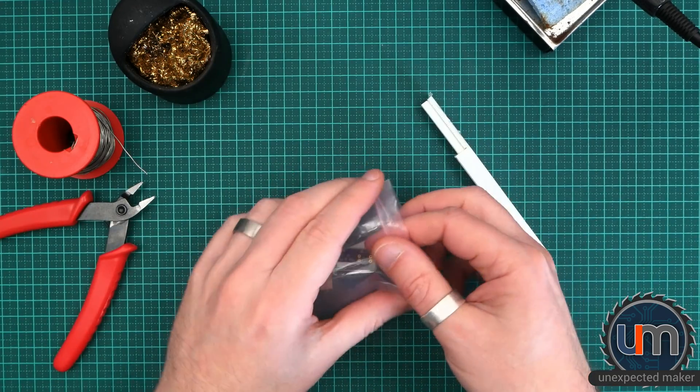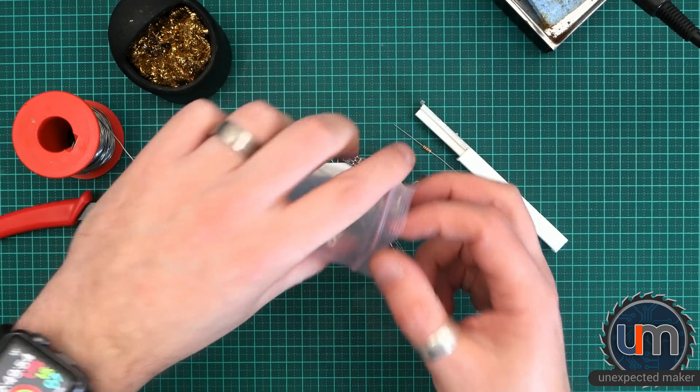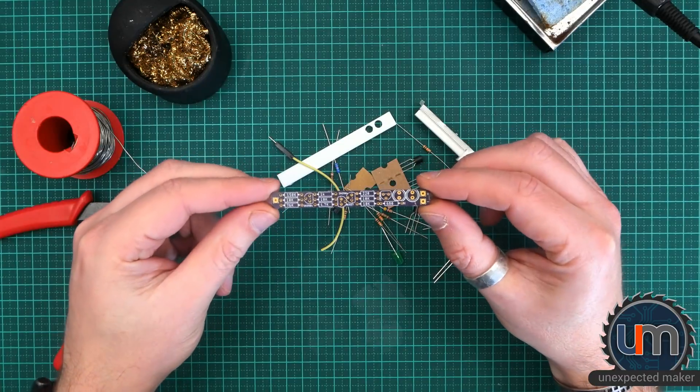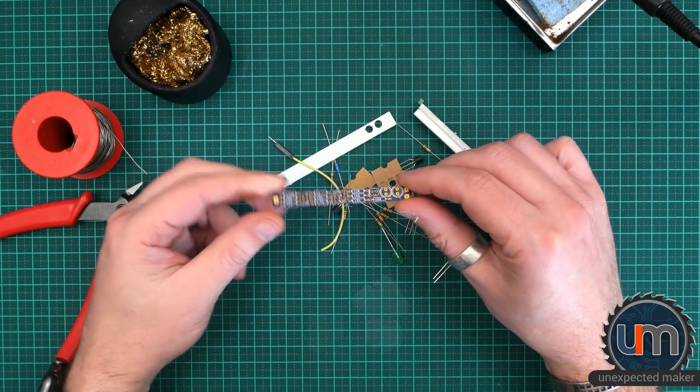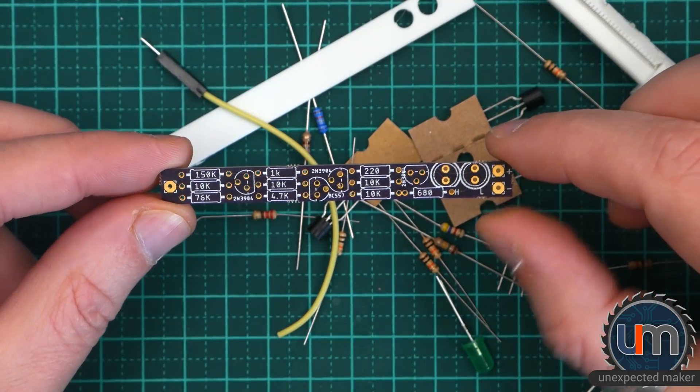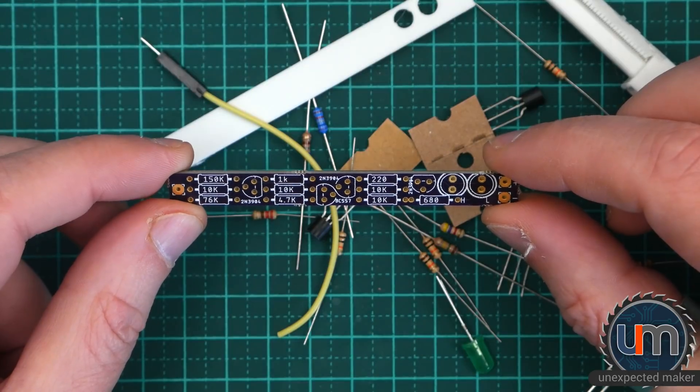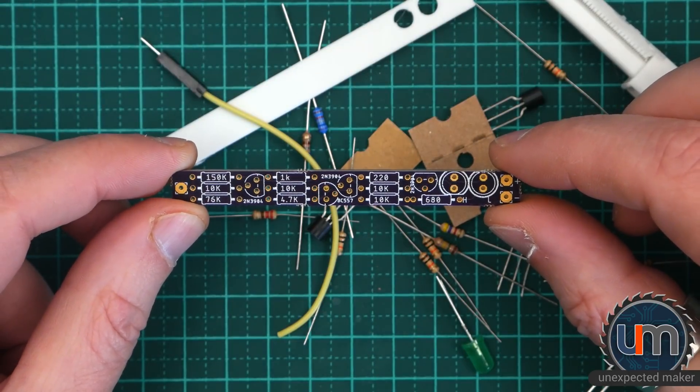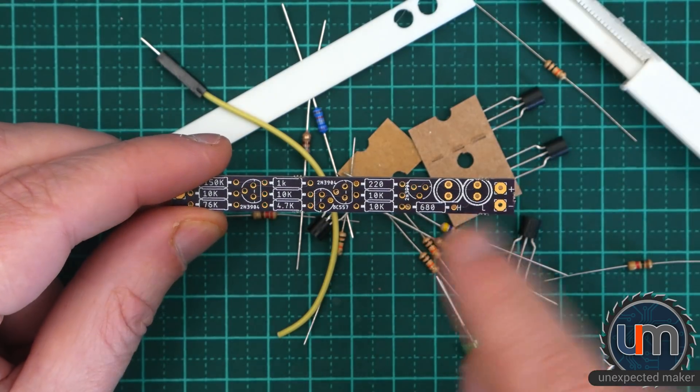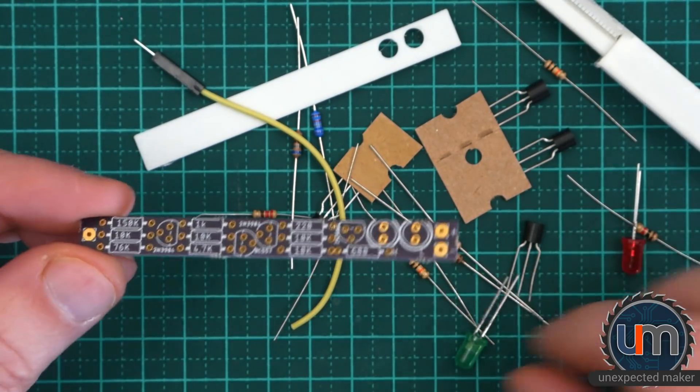I bought this kit off Dave Astels from his Tindie store. It's a logic probe, it's all through hole. You might have seen it on one of my unexpected mail videos. Let's get a little bit closer and have a look at the board. As you can see, it's all through hole. Everything is nicely labelled. All the resistors are labelled, the transistors are labelled. It's pretty straightforward. The only thing I can't see is possibly the LEDs. Can't tell which way they go in. I guess we'll work that out.